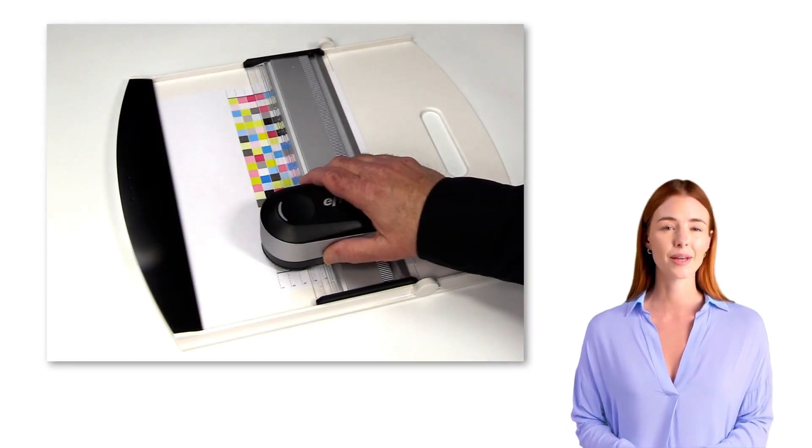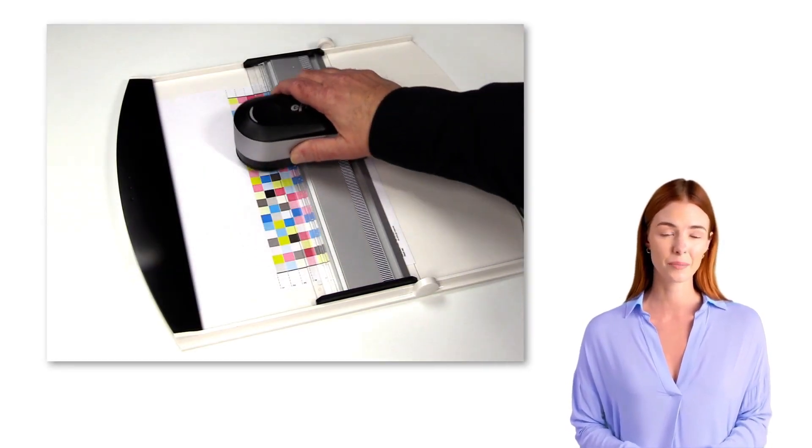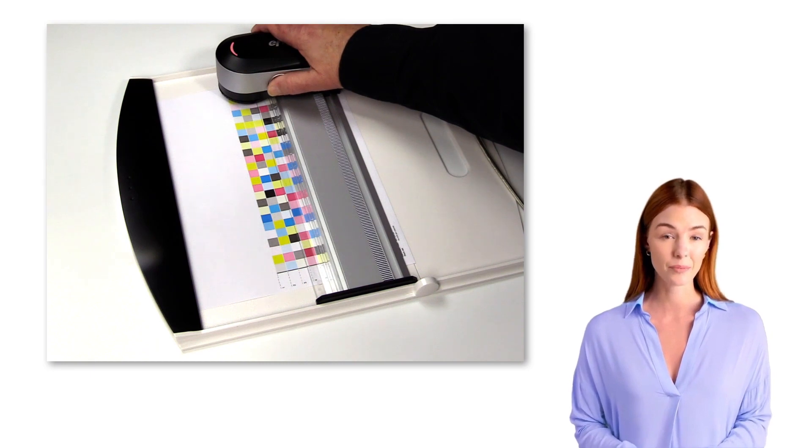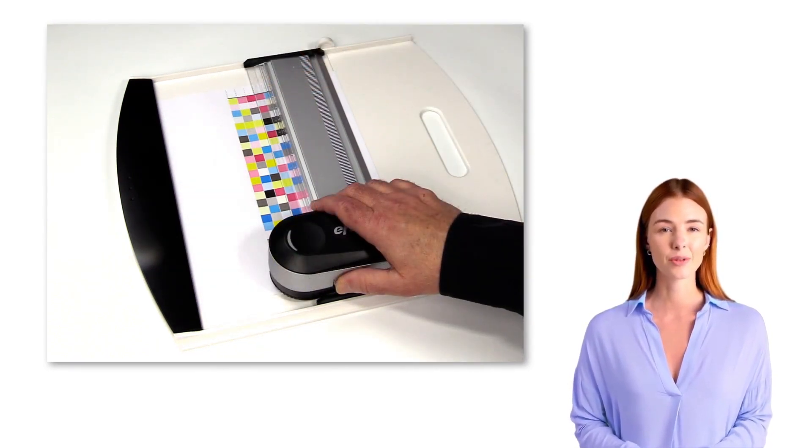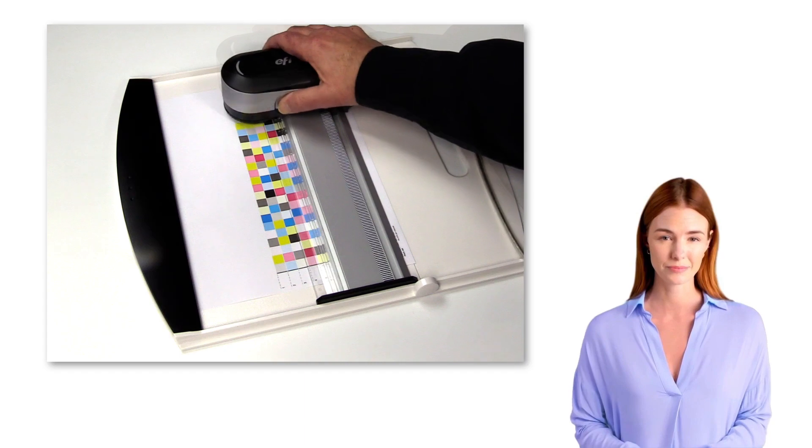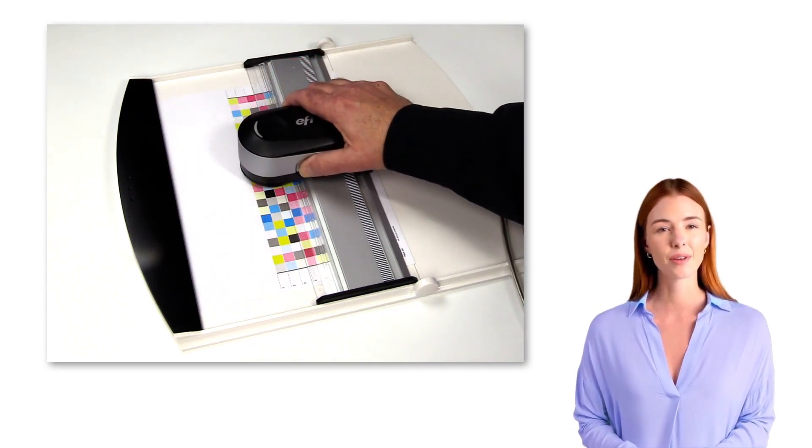Common reasons for measurement errors are: starting or ending a measurement with the opening in the instrument head positioned on a patch and not the unprinted area of the row; moving the instrument too quickly across the printed chart; or moving the instrument too slowly across the printed chart.